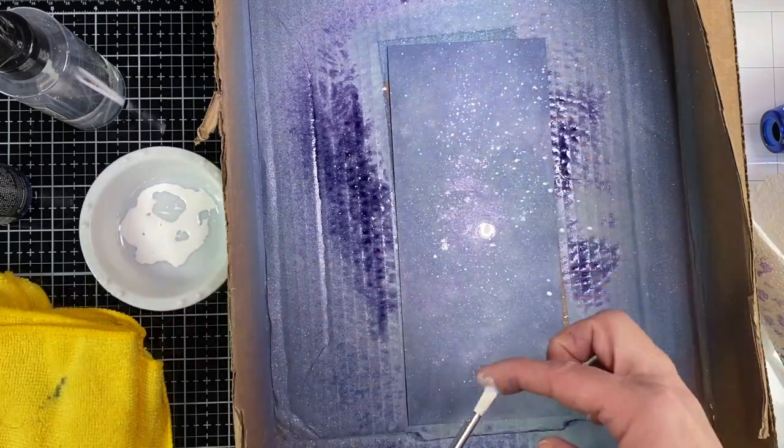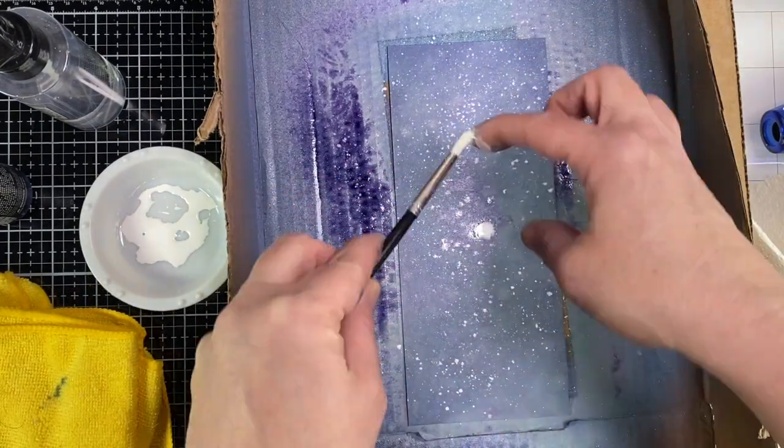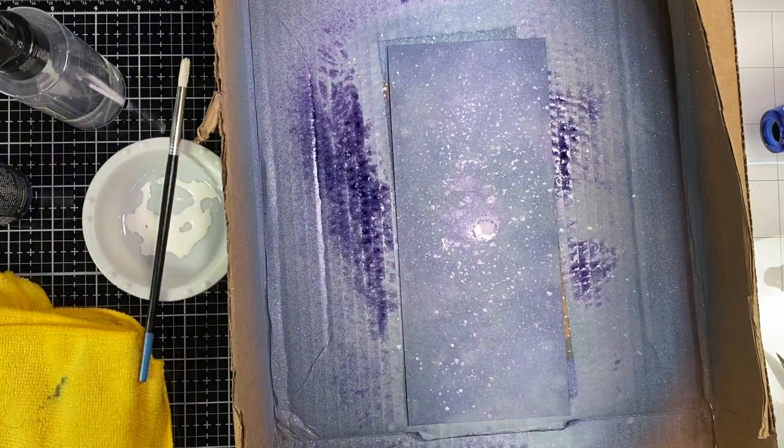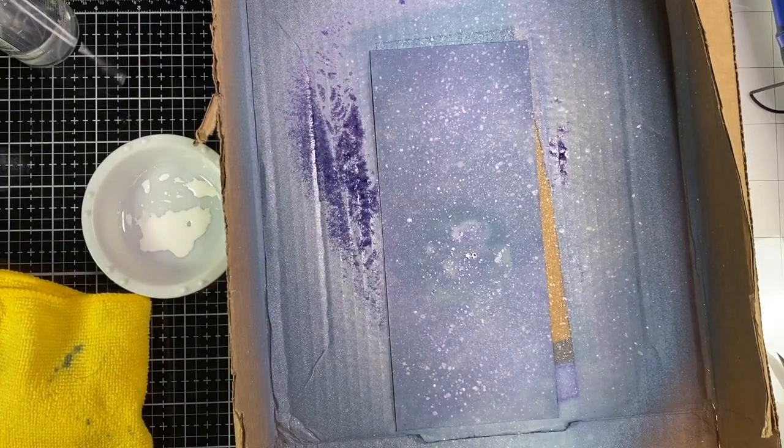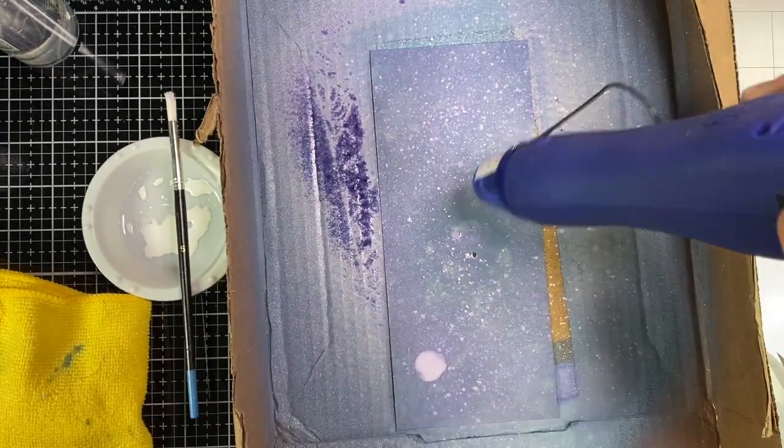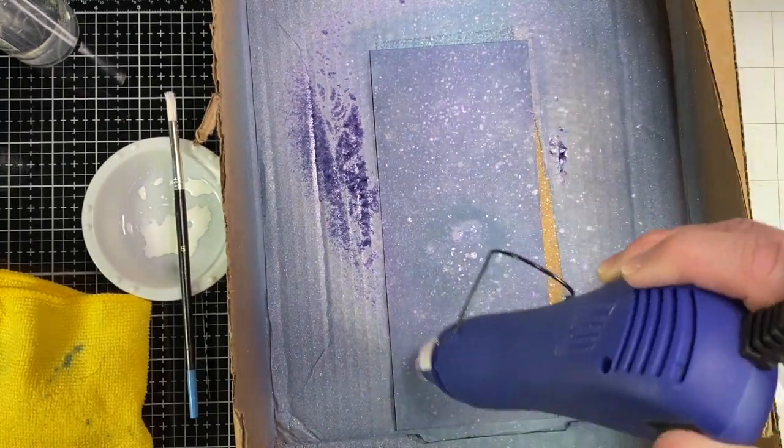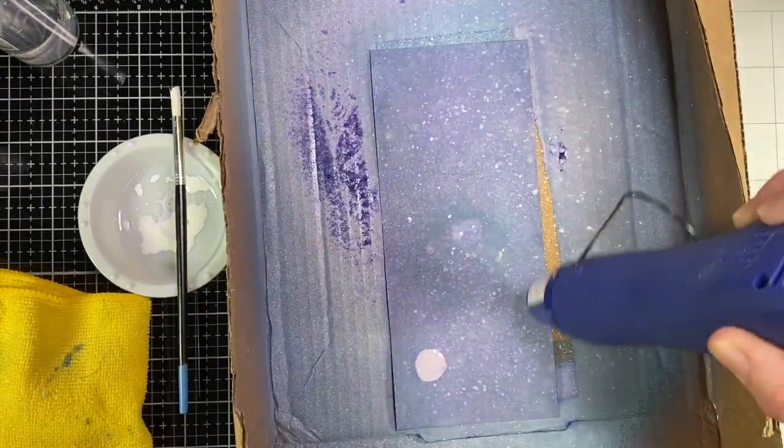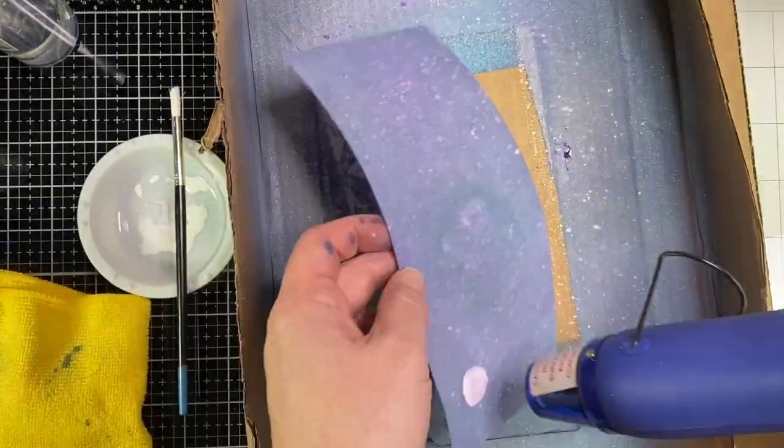I grabbed some distress paint in picket fence and I put a little bit of water to thin it. I grabbed a paintbrush and I just splattered in the splatter box. The interesting thing with this is that it didn't dry white. It actually reacted with that picked raspberry the most and it gives it more of a pink feel to it.